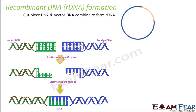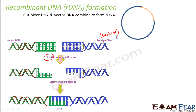Let's understand this with an example. Suppose this is the vector DNA. The recognition sequence for EcoRI in the vector DNA is GAATTC. This is also the foreign DNA — the desired DNA — and here also EcoRI needs to find its recognition sequence to cut it.